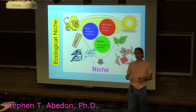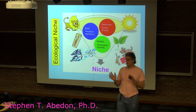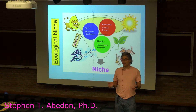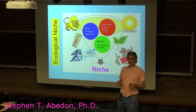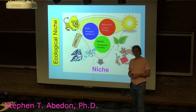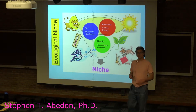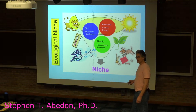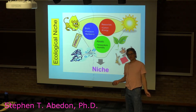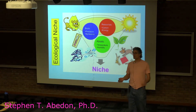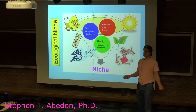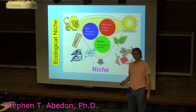But if the amount of things available in an environment are sufficiently lacking or sufficiently harsh, a given organism isn't going to be able to exist within that environment. Another way of thinking about a niche is that it's basically a description of the job that an organism has, and the conditions under which it does that job.